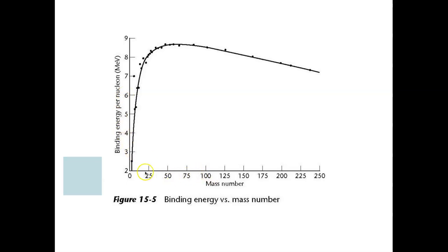The x-axis shows mass number. Binding energy is the force that keeps the nucleus together. There are two forces at play: the strong force, which is the strongest force in nature and keeps quarks — and therefore protons and neutrons — together in the nucleus; and the electrostatic force, which is the force between positive and negative charges we've discussed all year.